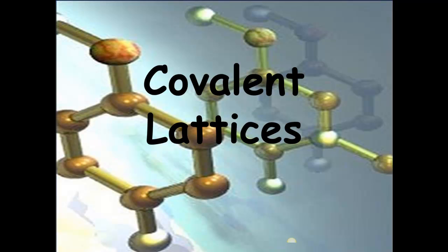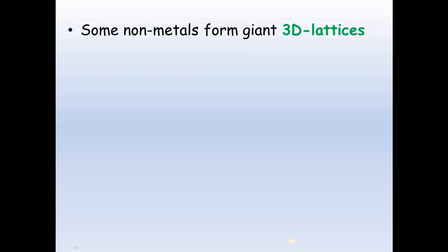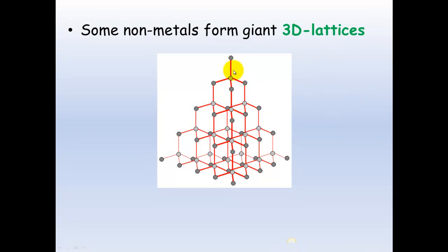Covalent lattices. So far we've been looking at the fact that non-metals will make molecules. Non-metals can also form giant 3D lattices, and by lattice I'm talking about this regular shape structure. Similar in lattice form to an ionic bond, but these are non-metals forming these giant three-dimensional lattices. There are no individual discrete molecules. They are these ongoing giant three-dimensional lattices.